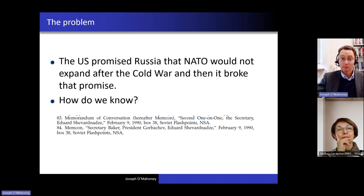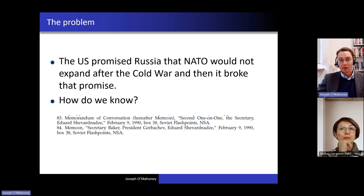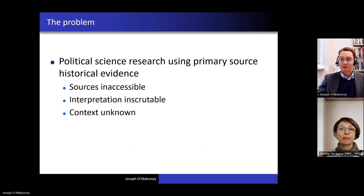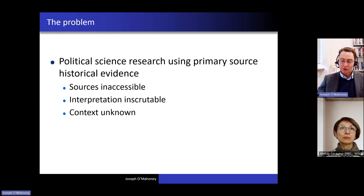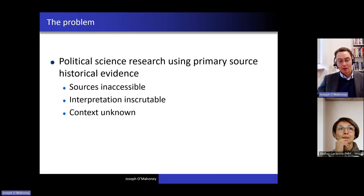We have absolutely no idea ourselves if it's actually true that this statement — 'not one inch' — was actually made. We have to take Shifrinson's word for it. This is one example of a much broader problem: all political science research that uses primary source historical evidence suffers from this problem. The National Security Archive is making more documents available online — they're putting digital representations online, much more so than used to be the case. But there's still a lot of documents which are not available. And even if they're in some online repository somewhere, how do you know that's the case? So even if Shifrinson is citing to this document, that document might be online somewhere but you've no way of knowing where it is.